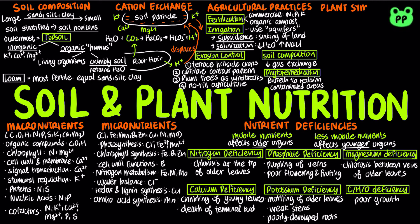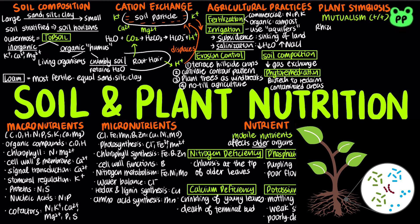Plants and soil microbes have a mutualistic relationship. The layer of soil bound to the plant's roots is the rhizosphere, which contains high microbial activity because of sugars, amino acids, and organic acids secreted by roots. Free-living rhizobacteria thrive in the rhizosphere, and some can enter roots.